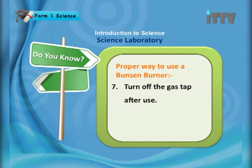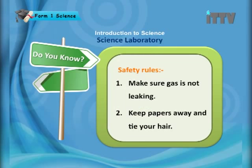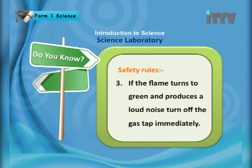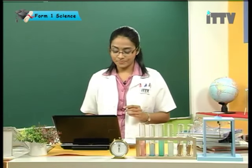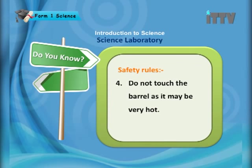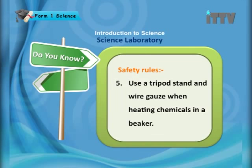Turn off the gas tap after use. Safety precautions when using a Bunsen burner: make sure gas is not leaking; keep papers away and tie your hair to prevent fire. If the flame turns green and produces a loud noise, turn off the gas tap immediately. Do not touch the barrel as it may be very hot. Use a tripod stand and wire gauze when heating chemicals in a beaker.